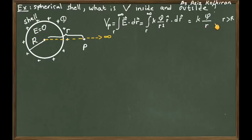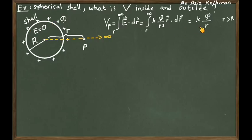So the result is KQ divided by r, where r is the distance of point P to the center. If point P is outside the shell, this is the potential at that point.